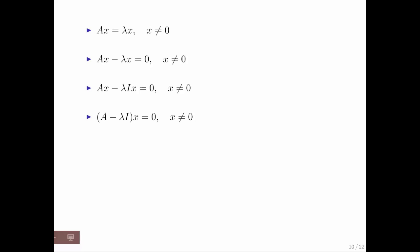And the reason for that is that we can then take x out and look at this as A minus lambda I, that's a matrix, times the vector x. And notice that has to be equal to the zero vector.